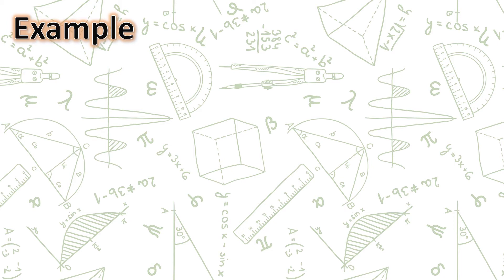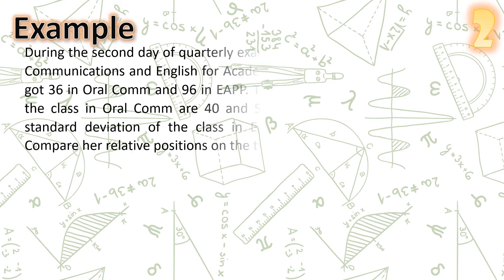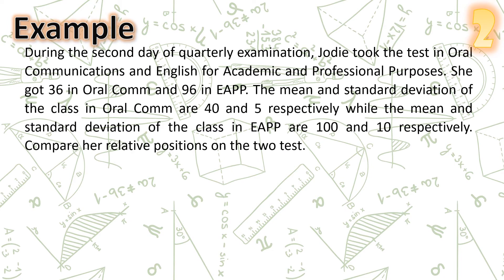Example number two: during the second day of quarterly examination, Jody took tests in oral communications and English for Academic and Professional Purposes (EAPP). She got 36 in oral communications and 96 in EAPP. The mean and standard deviation of the class in oral communications are 40 and 5 respectively, while the mean and standard deviation of the class in EAPP are 100 and 10 respectively. Compare her relative positions on the two tests.